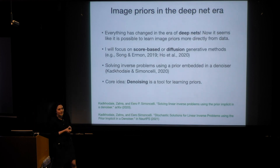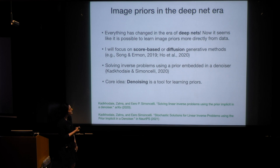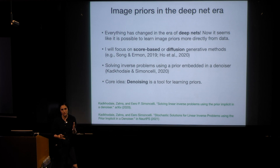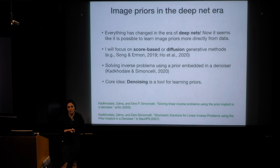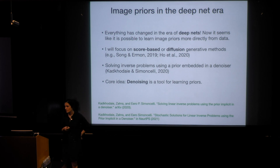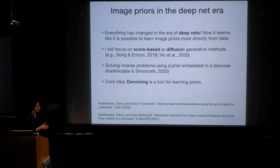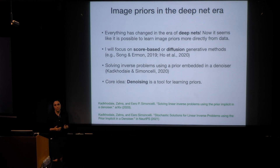Now we are in the era of deep neural networks and everything has changed, including density estimation. It seems like we now have ways to estimate densities in high dimensions in a more data-driven way. There have been examples — GANs, VAEs — but here I'm going to focus on diffusion models or score-based models. The key idea behind all of these variations of diffusion is that denoising is a good tool to learn priors of images.